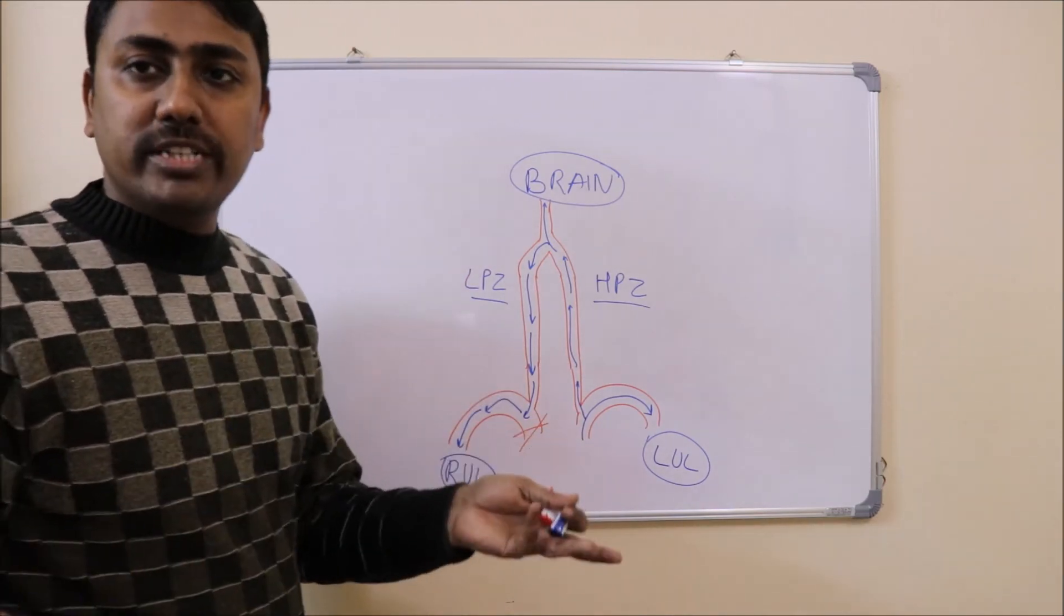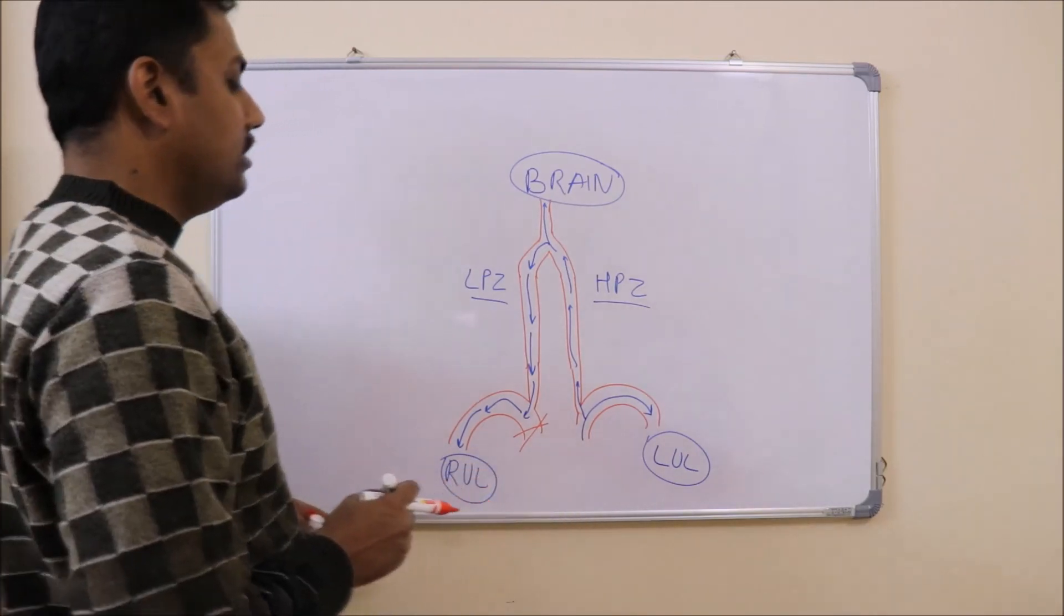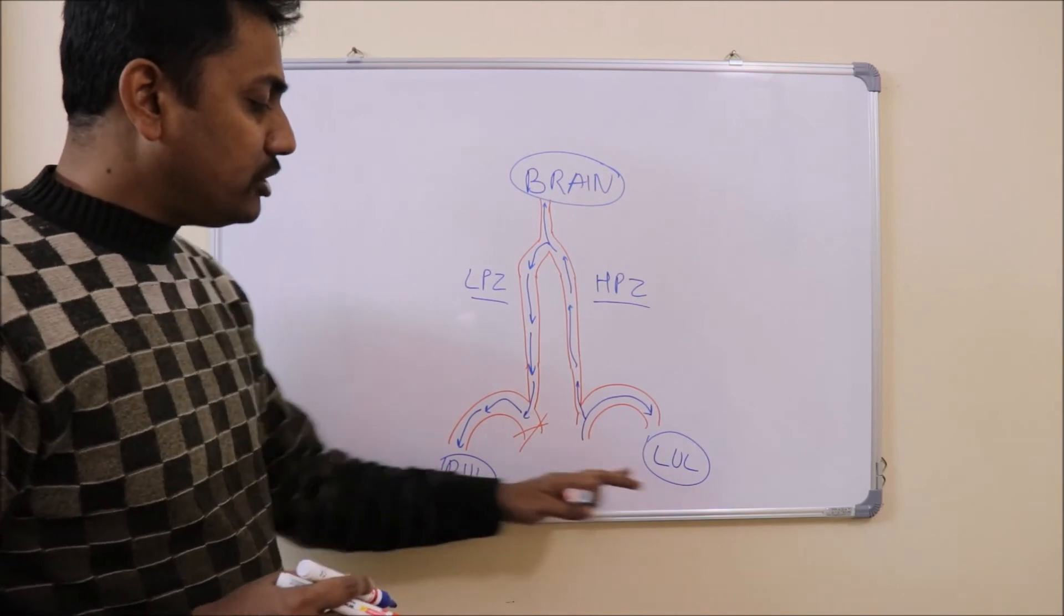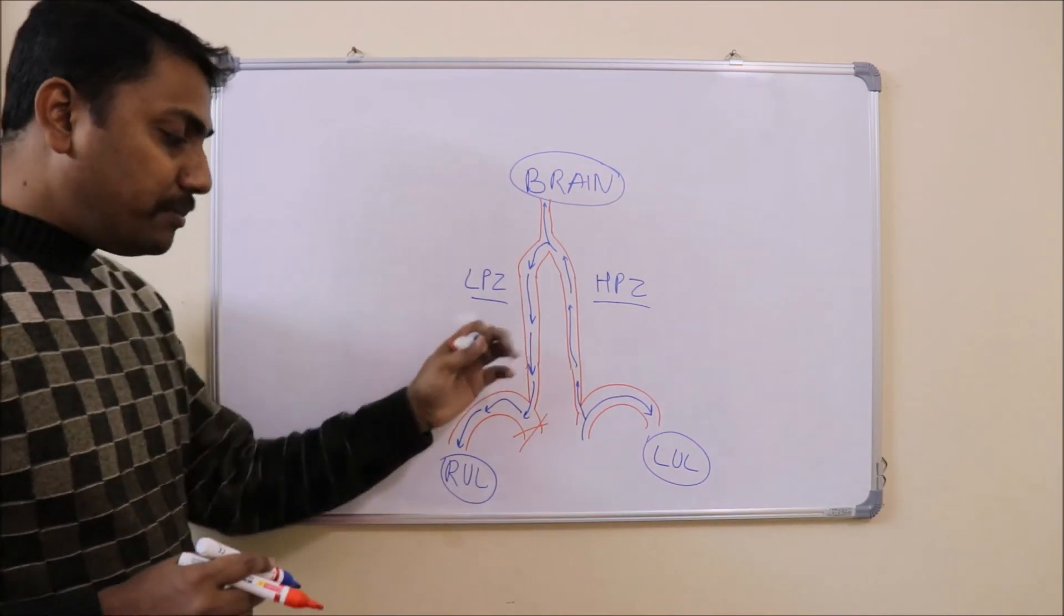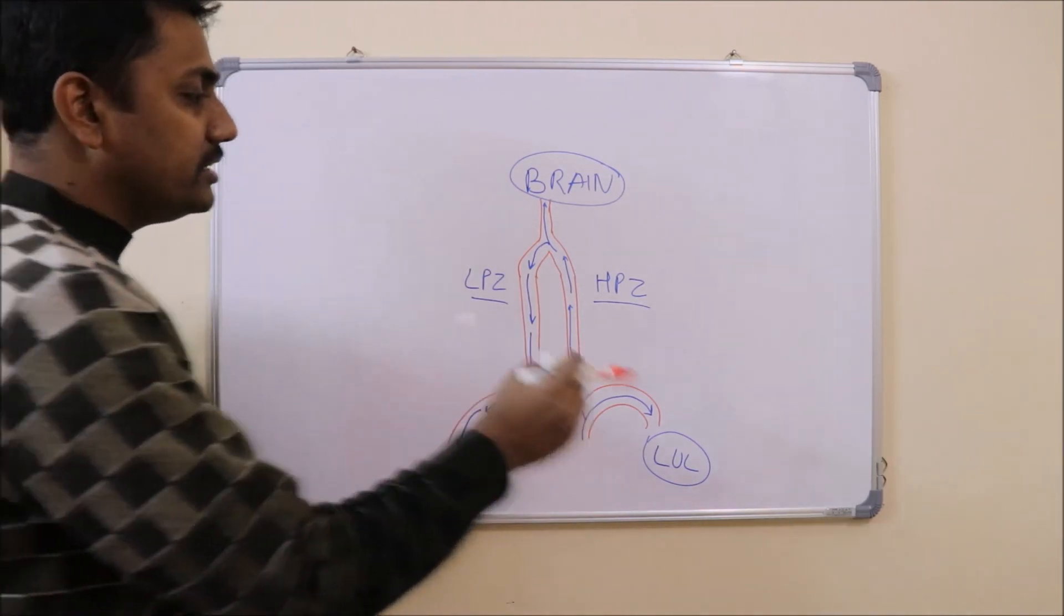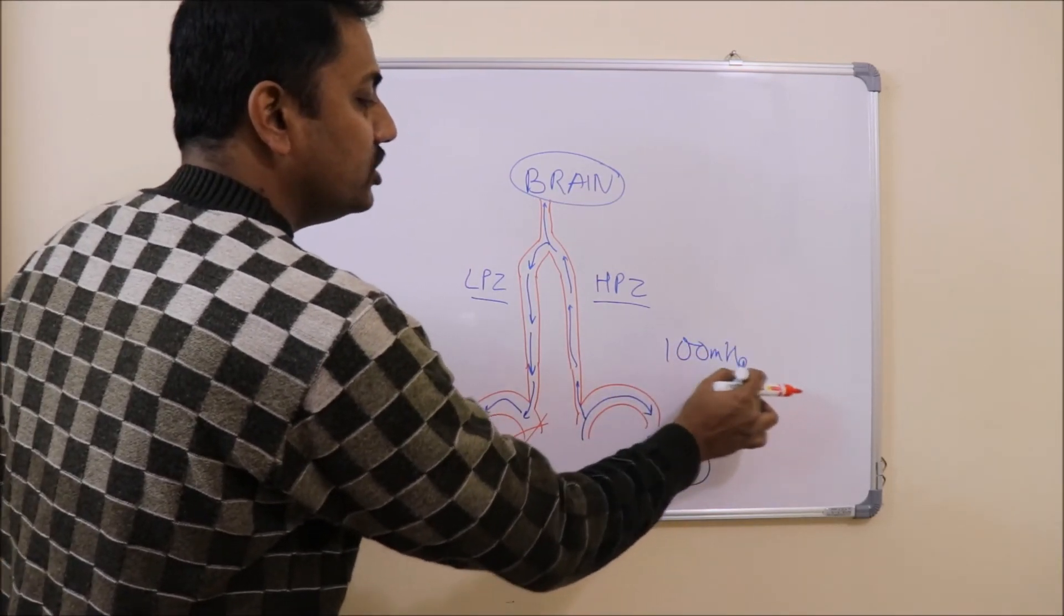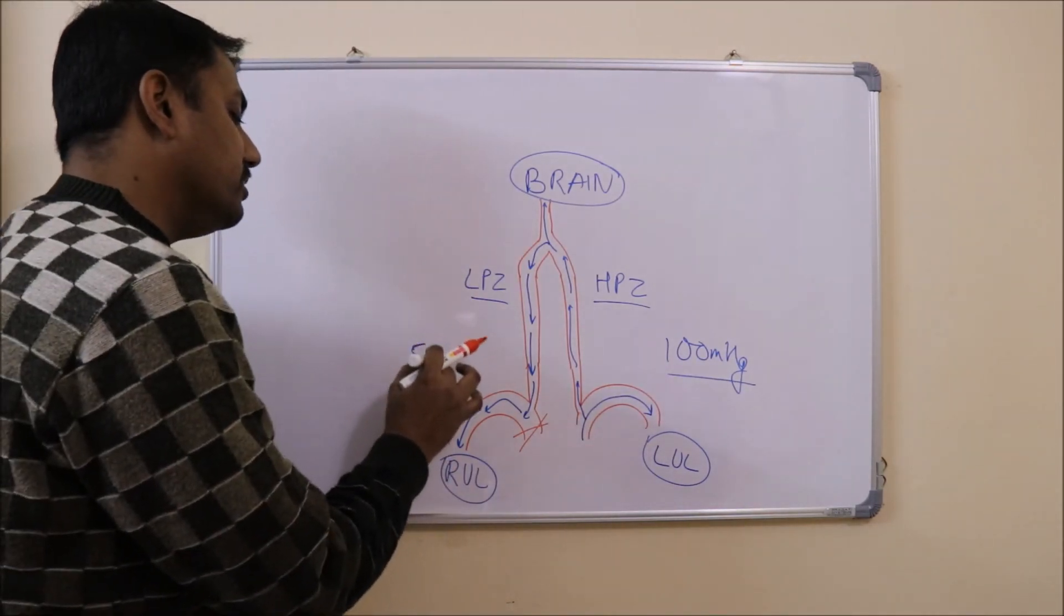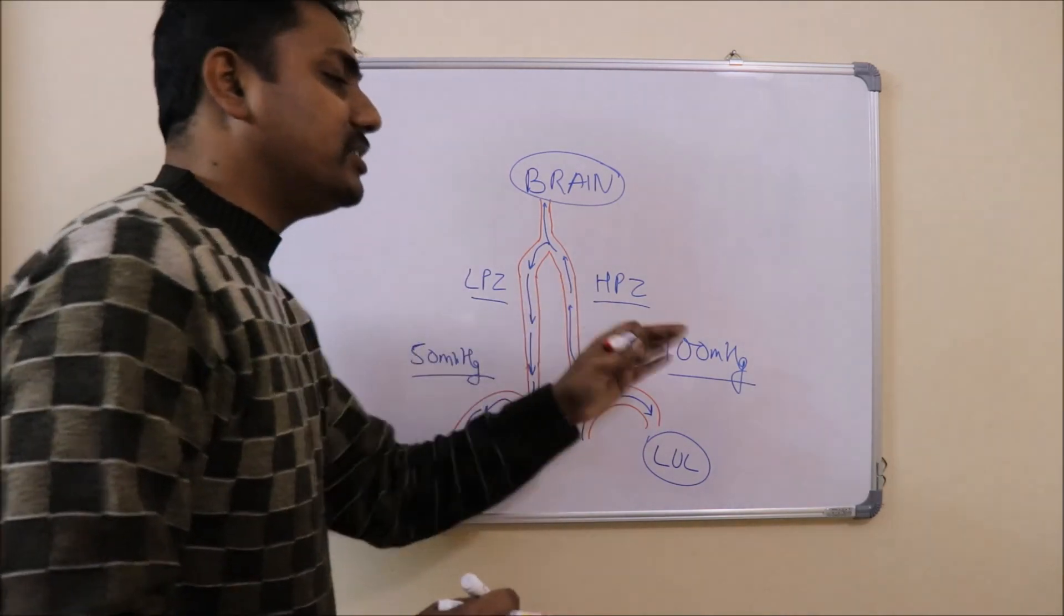There will also be a difference of blood pressure on both sides. There is not so much blood coming to the right side but some blood is coming. Suppose this is 100 mm of Hg hypothetically, this side would have 50 mm of Hg. So there will be a differential blood pressure when we take blood pressure on both the arms.